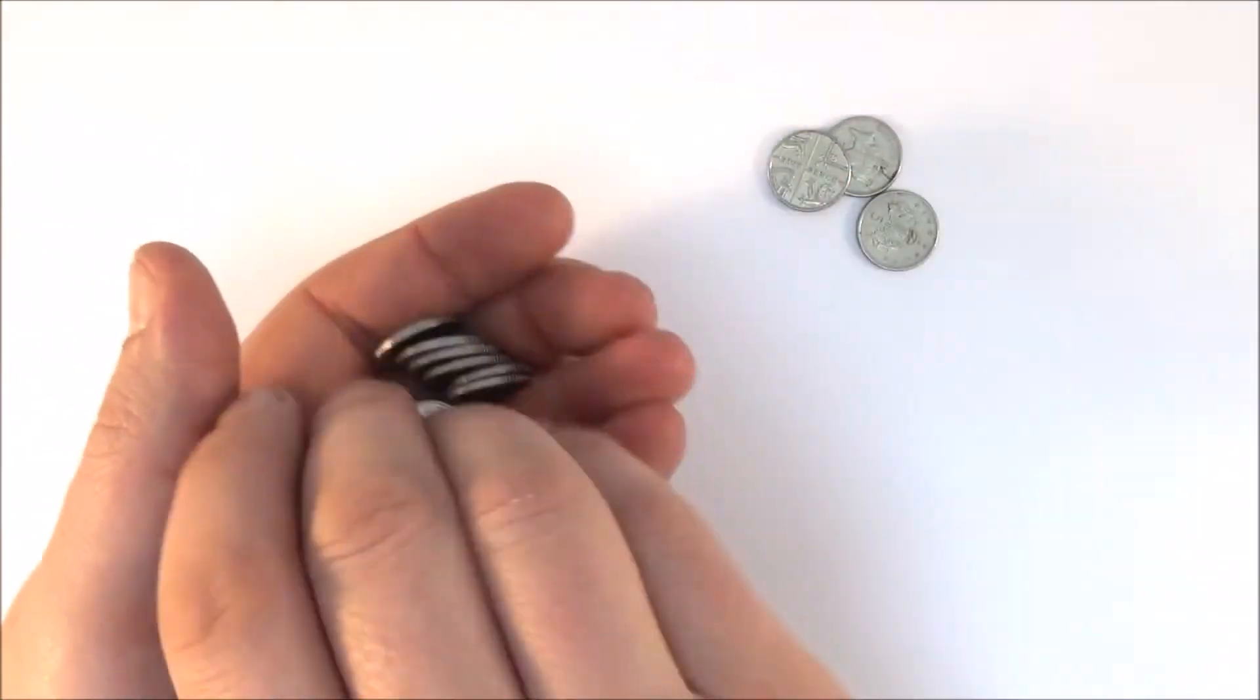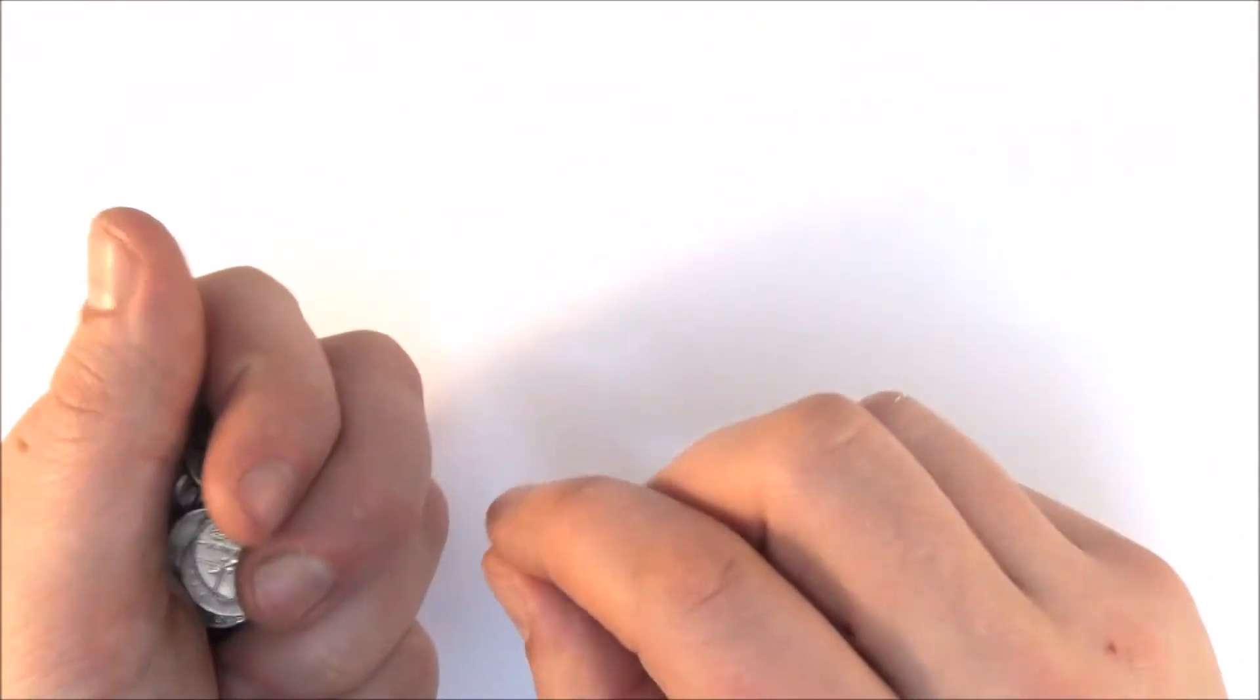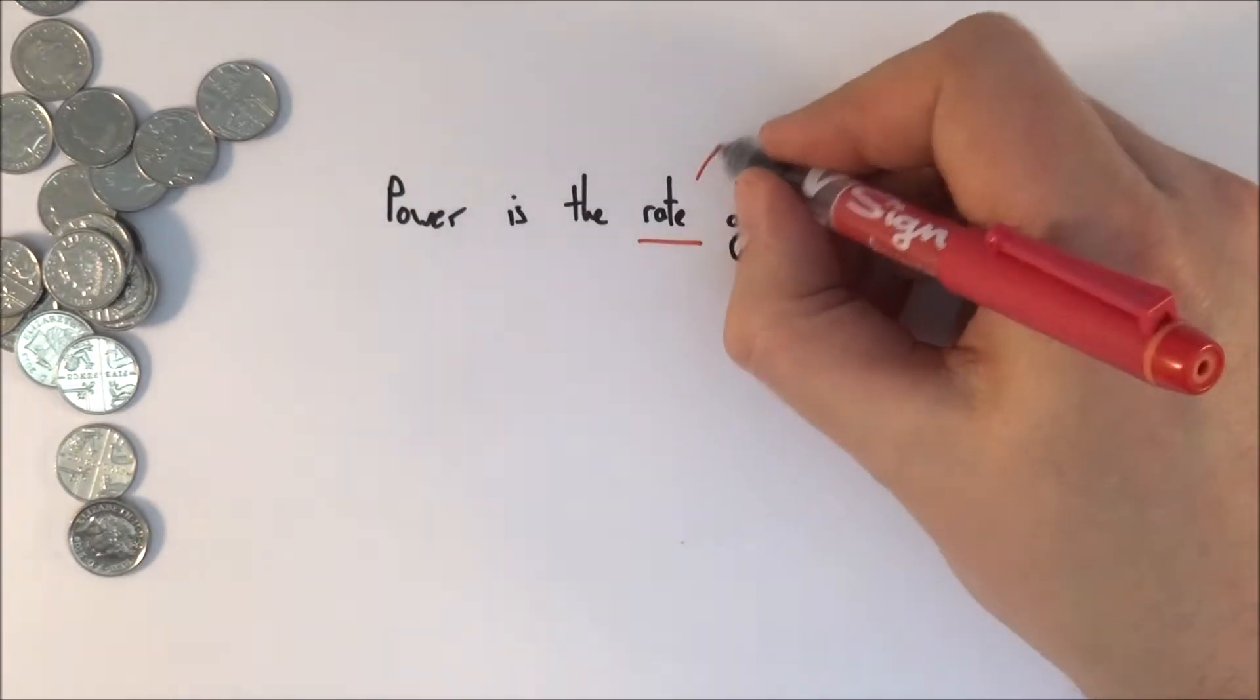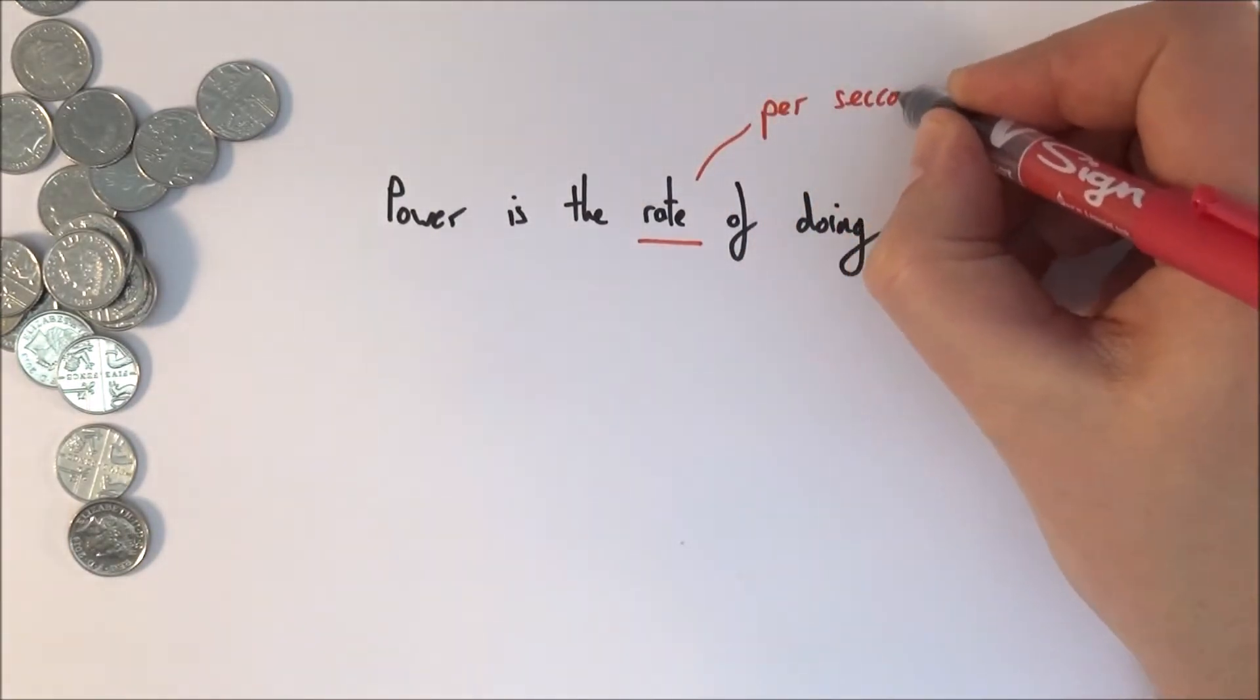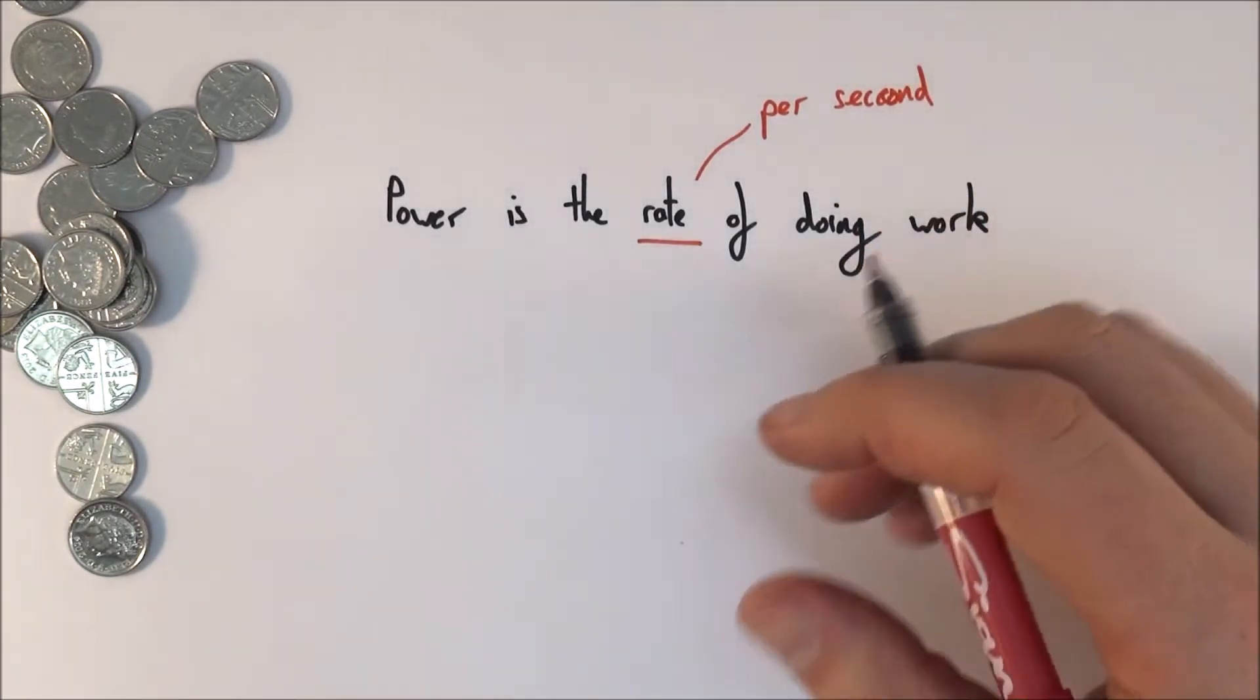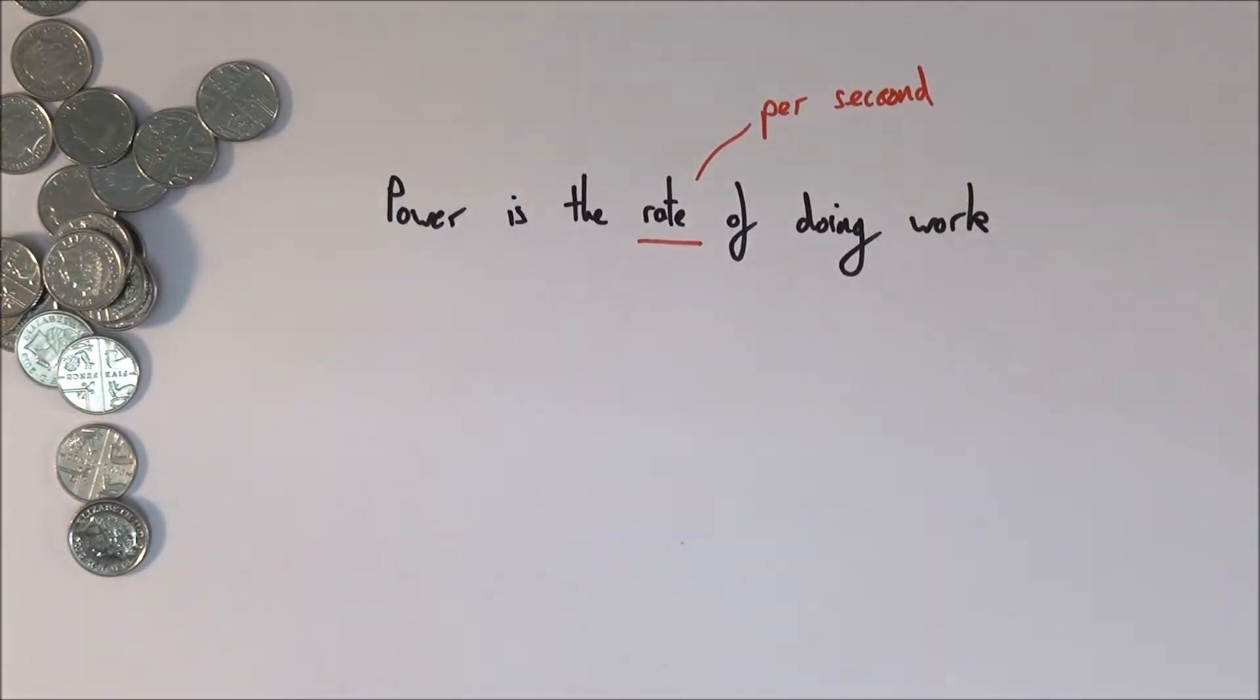It's the same with energy. We can also look at how quickly energy is transferred, and this is what we call power. Now, power is defined as the rate of doing work, and the word rate just means per unit time, or per second. So this is how much energy is transferred per second. Work and energy are the same thing - you do work on something, you're transferring energy to it.